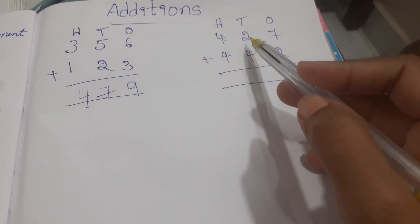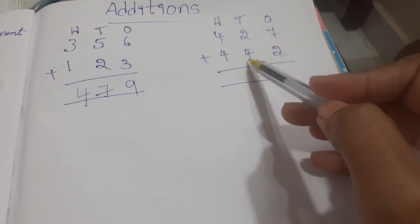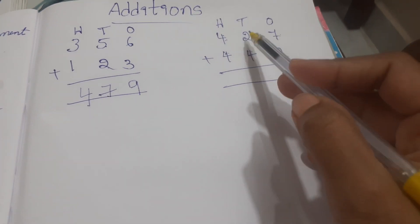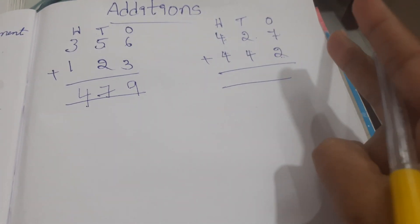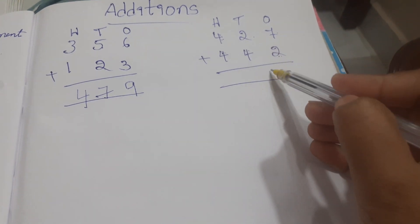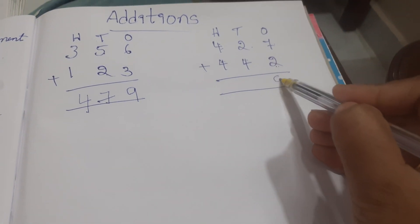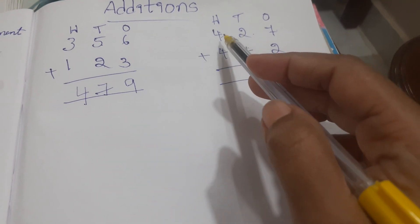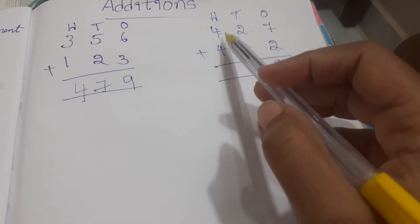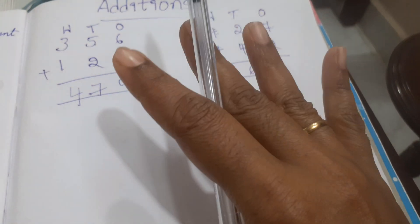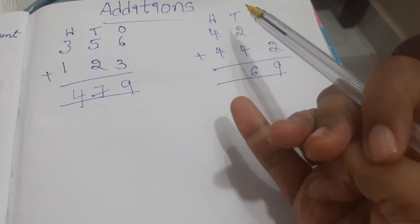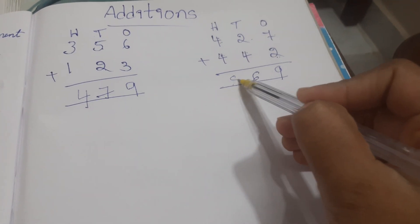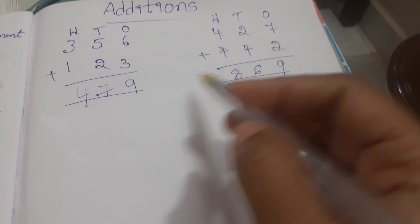In the tens column, four is bigger than two, so keep four in mind, two fingers open — four, five, six. In the hundreds column, both numbers are four, so keep one four in mind and open four fingers — four, five, six, seven, eight. Write eight.